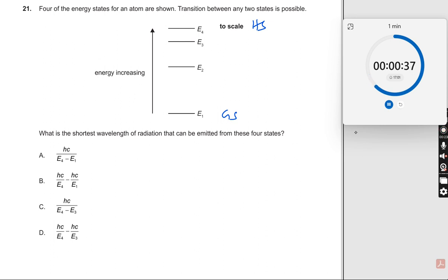We know that hc divided by lambda equals delta E. Therefore, lambda equals hc divided by delta E. H and c are constants, but delta E is a variable. The larger the delta E, the smaller the value of lambda.